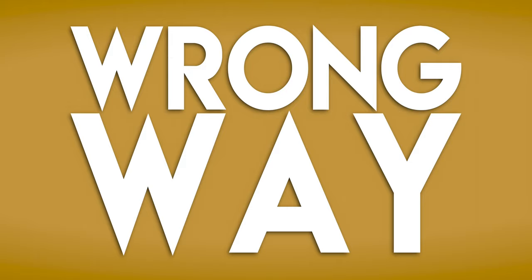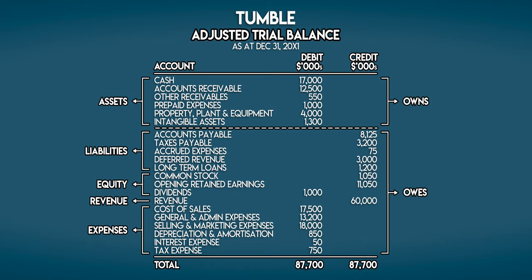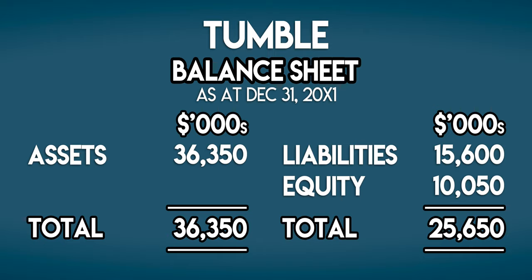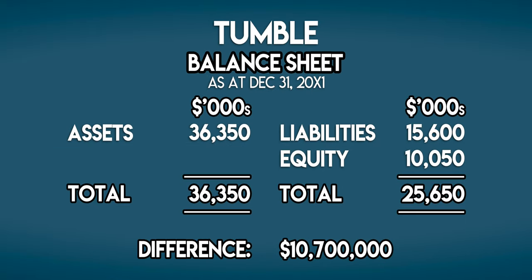So how do we make a balance sheet? There's two ways to do this: the right way and the wrong way, and I'll show you both. We'll start with the wrong way because this is a really easy mistake to make. We take all of Tumble's assets, liabilities, and equity accounts and we pop them in their sections of the balance sheet. In theory it's the right thing to do, but check this out: total assets add up to $36,350,000 and total liabilities plus equity add up to $25,650,000. That's a difference of $10,700,000. So this balance sheet doesn't balance.